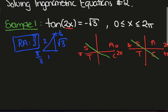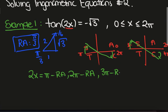So as always we go from the horizontals and what we find is that 2x will be pi minus the reference angle, 2 pi minus the reference angle. This one will be 3 pi minus the reference angle and 4 pi minus the reference angle.